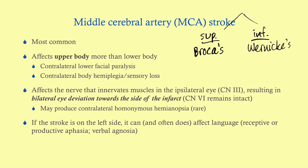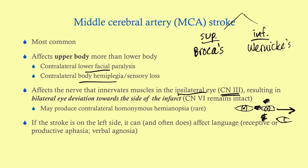Both MCA division strokes affect the contralateral lower face and contralateral body. They also affect the nerve innervating the ipsilateral eye — cranial nerve 3. Because CN3 is affected, you get eye deviation toward the side of the infarct. That's because the lateral rectus is still working unopposed, and without the other muscles supplied by CN3, the eye deviates toward the side of the stroke.